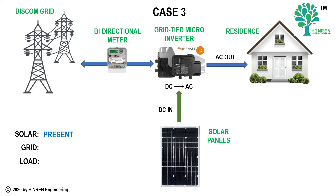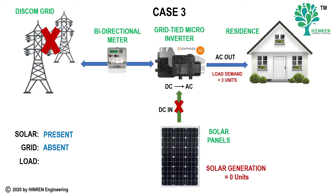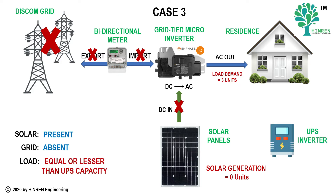In Case 3, the load demand is about 3 units and solar is available — however, the grid is absent due to either a power shutdown or maintenance. Since it is a grid-tie system, though solar panels are generating energy, that energy cannot be used and does not flow into the inverter. In an on-grid system, the presence of the DISCOM grid is mandatory for the system to work effectively. There is neither export nor import. If you have a UPS, you can run your loads through it.